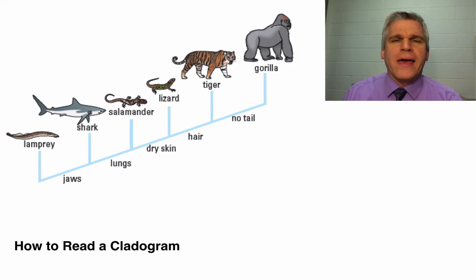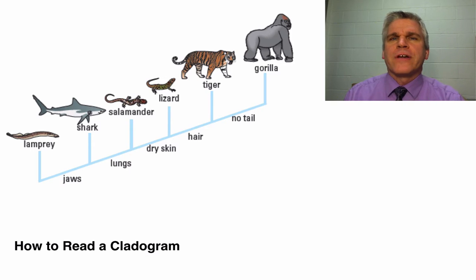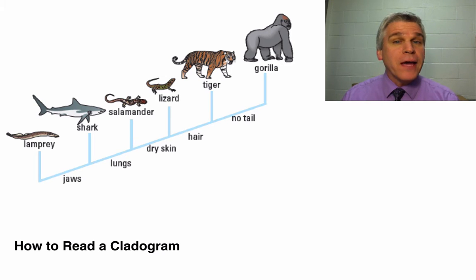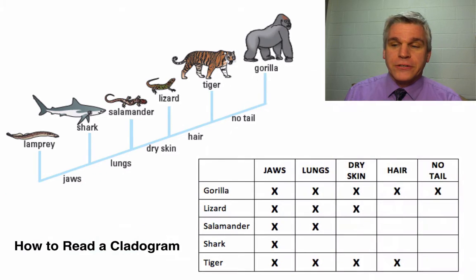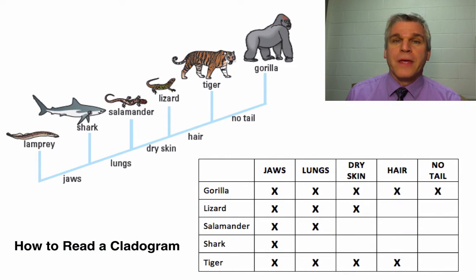We have an example here of a cladogram, and this consists of six different animals. One thing that they all have in common is that they each have a backbone, but we can start to separate these into different groups or different clads using the table of derived characters. Notice you'll see some Xs in the table — those represent traits that that particular organism has.